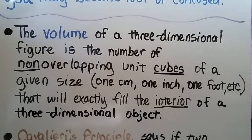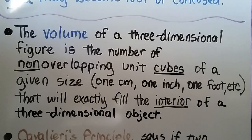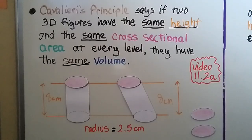The volume of a three-dimensional figure is the number of non-overlapping unit cubes of a given size — like one centimeter, one inch, one foot, etc. — that will exactly fill the interior of a three-dimensional object. We discussed this in the last video a little bit.